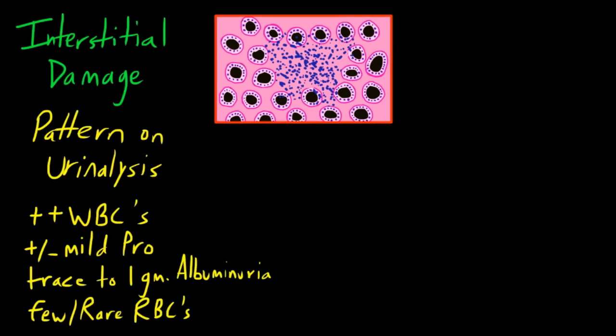When working up a patient with acute kidney injury, you're doing a urinalysis and urine microscopy. If your patient has interstitial nephritis or interstitial damage, the pattern on urinalysis is dominated by white blood cells — pyuria — because of all the inflammation in the interstitium. You may see a little proteinuria, trace to a gram of albuminuria, and maybe a few red blood cells, but not many. The urine can appear milky if there are enough inflammatory cells.